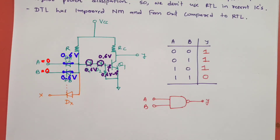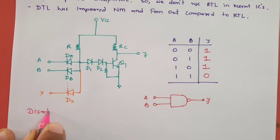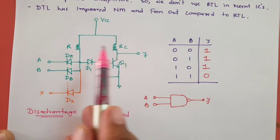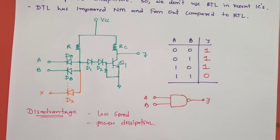However, this DTL circuit does have some disadvantages: it has lower speed, and because of its resistive components, there is power dissipation as heat. These are the disadvantages of the DTL logic family.